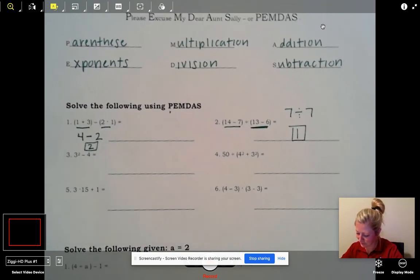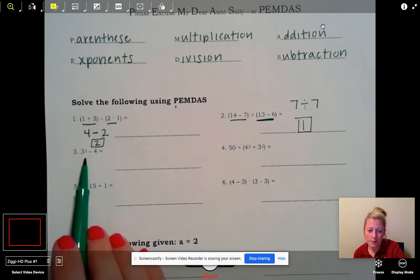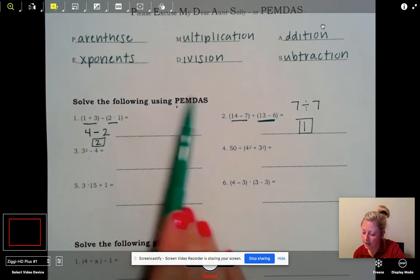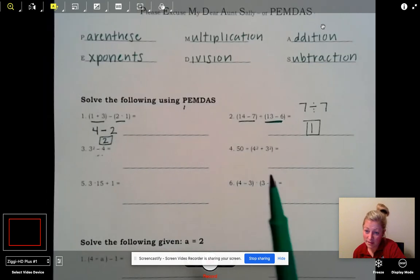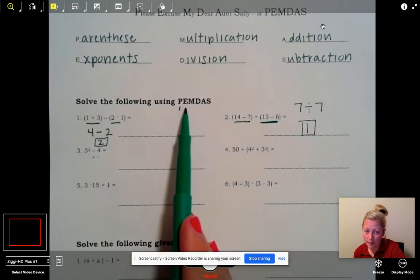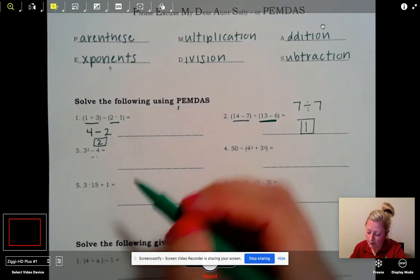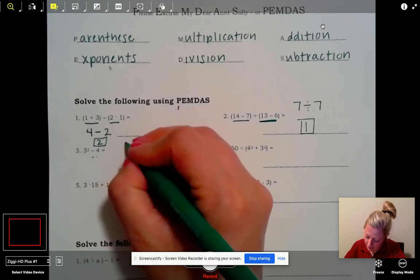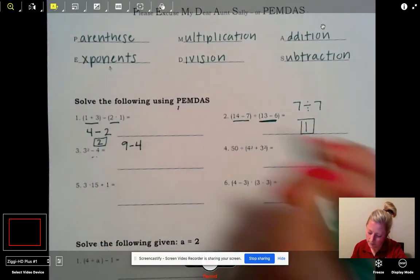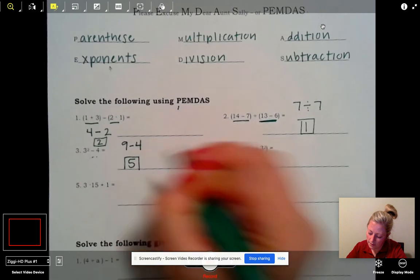Let's hop on over to number 2: (14-7)÷(13-6). Again, let's start with PEMDAS. Do I have any parentheses? I have two sets. So 14 minus 7 is just 7. Then we've got our division sign. Then 13 minus 6 is just 7. Now 7 divided by 7 is 1. Now we're done. Number 3: 3²-4. Again, refer back to PEMDAS. Do I have any parentheses? I don't see any. E stands for exponents. Do we have any exponents? We sure do. 3 squared is really just saying 3 times 3, so I'm going to have 9 minus 4. 9 minus 4 is 5. And that is it.